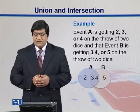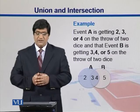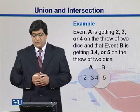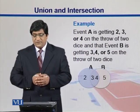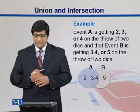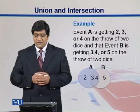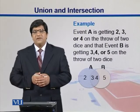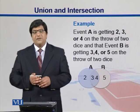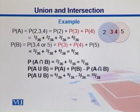We have event A which is getting 2, 3, or 4 on a throw of 2 dice, and event B is getting 3, 4, or 5 on the throw of 2 dice. When we make this Venn diagram, in A we have 2, 3, and 4, and in B we have 3, 4, and 5. We can see the intersection between A and B — 3 and 4 are common to both of them.